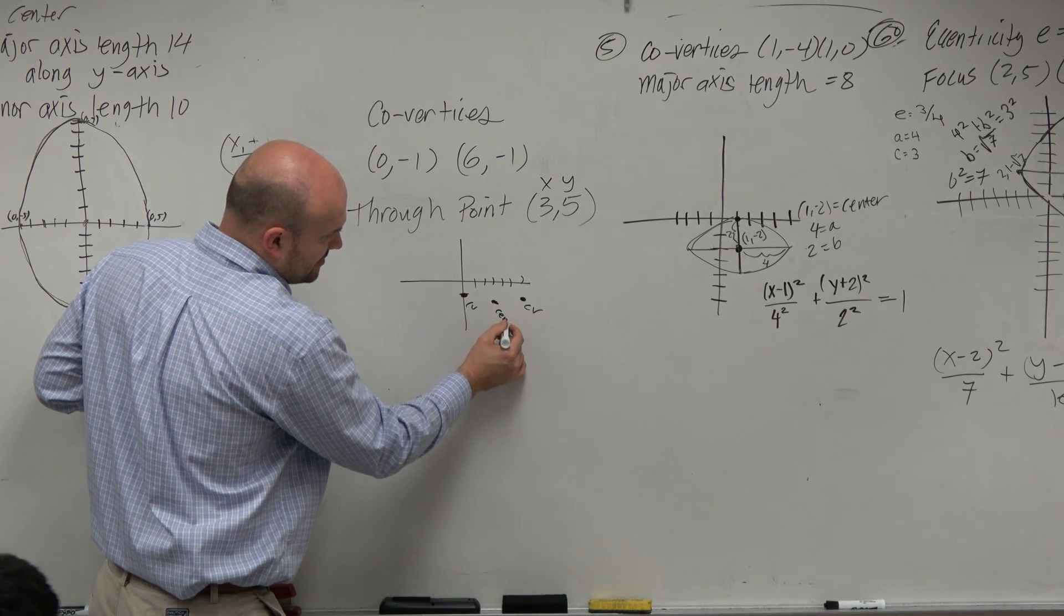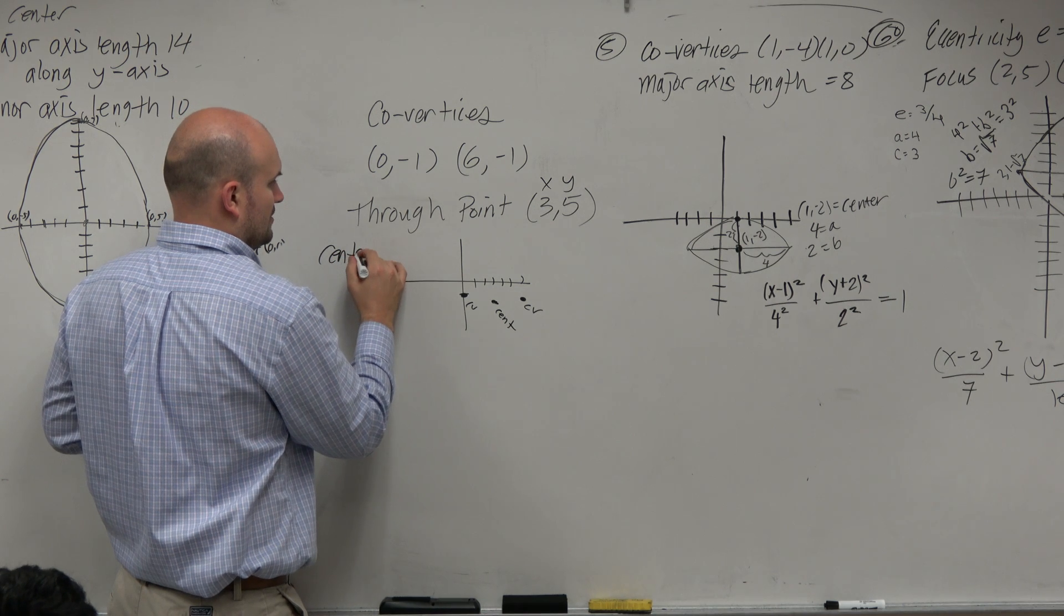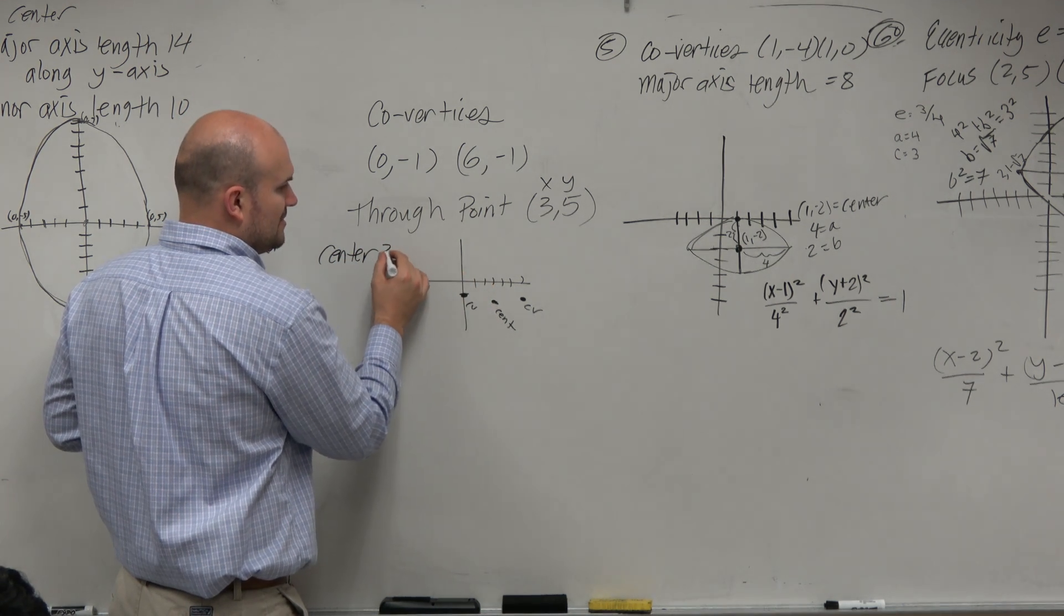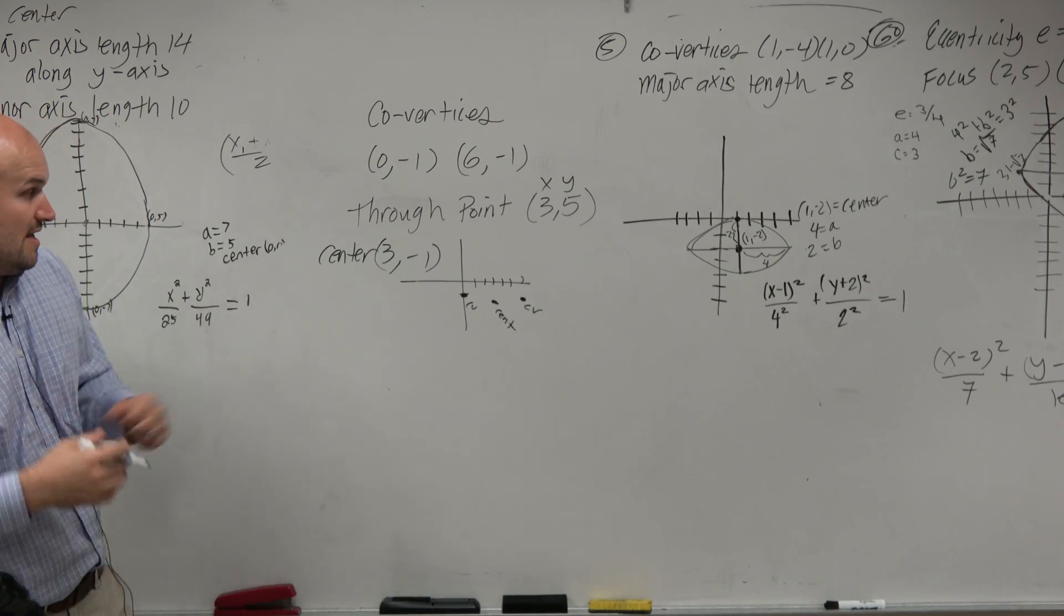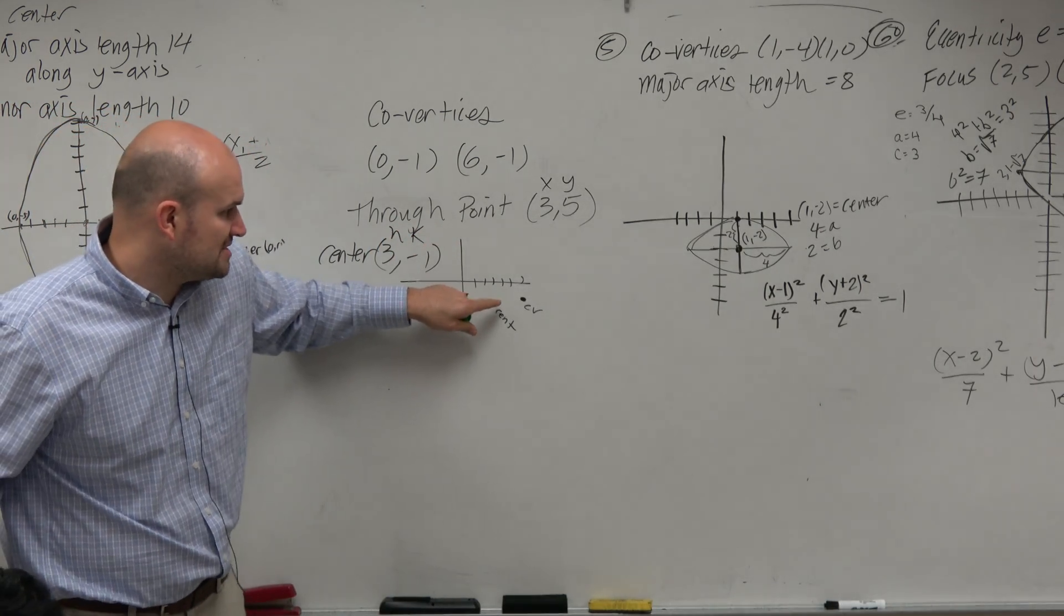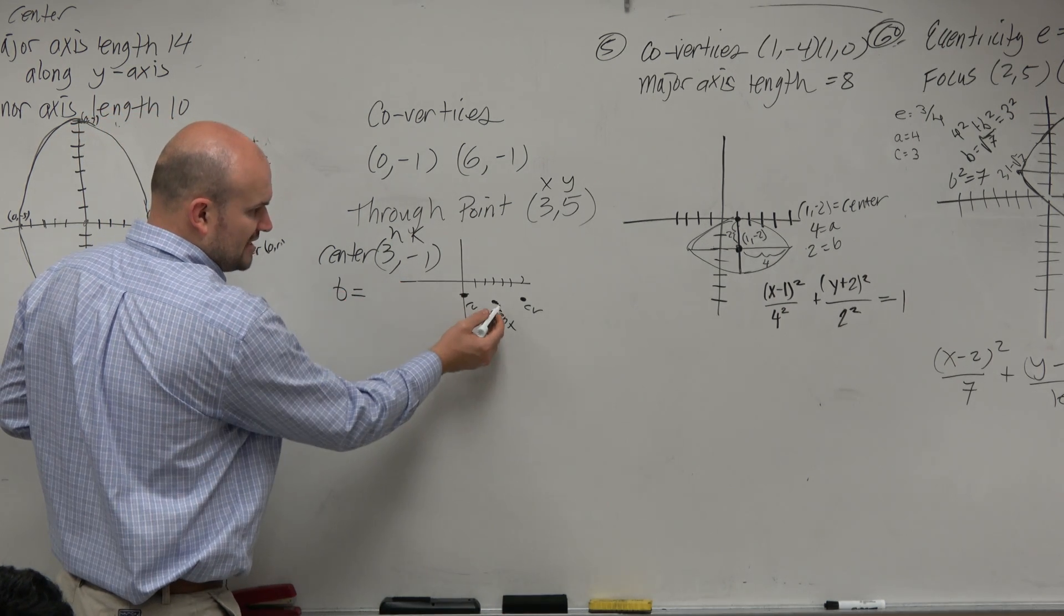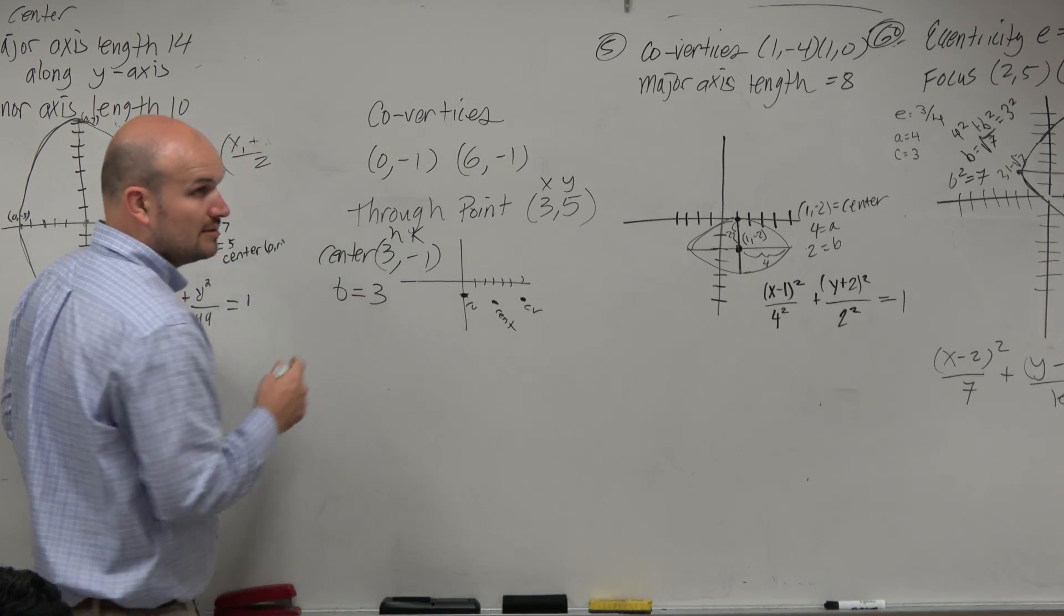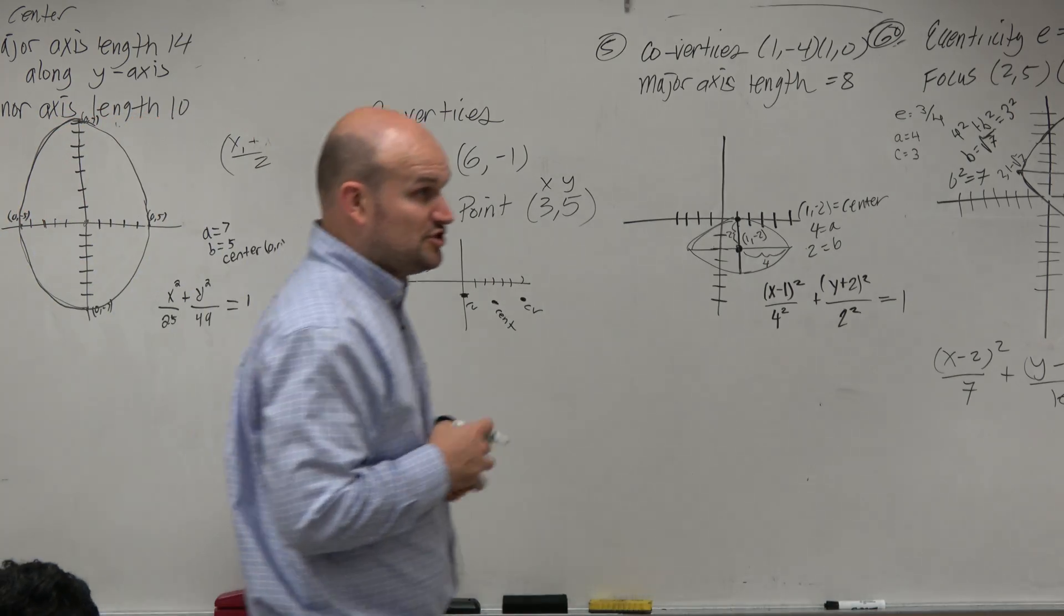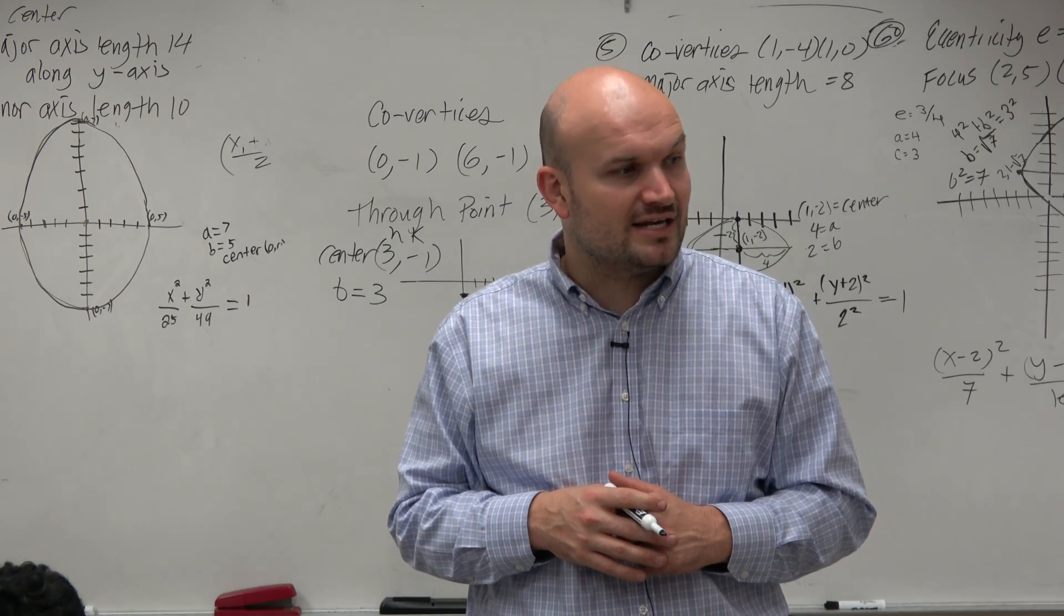So my center, let's figure this out, is at (3, -1). And that's h and k. Then I can determine the distance from the center to my co-vertice, which is going to be my b, which is equal to 3. Right? So just off of the information alone, I'm able to find all this out.